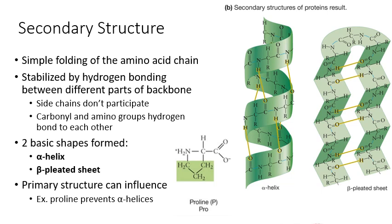Primary structure does influence secondary structure. The biggest example is proline, an amino acid with a side chain that loops back and attaches to the nitrogen of the amino group in the backbone, forming a pentagon-like shape. When proline is present, it forces a kink into the amino acid chain, which prevents an alpha helix from forming at that location.